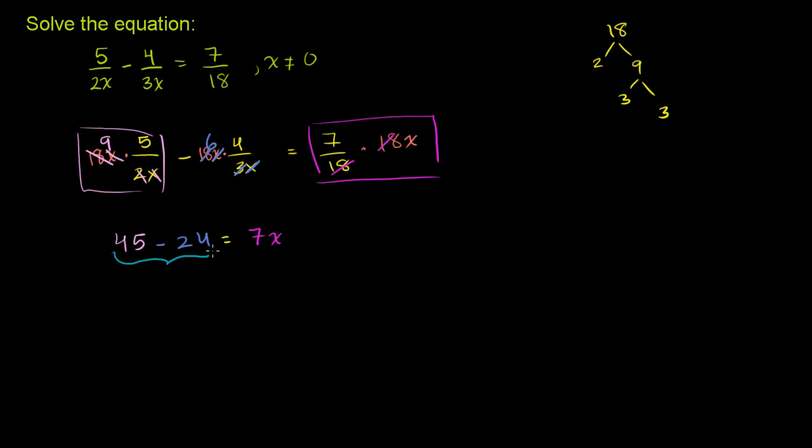Now what's 45 minus 24? It is, let's see, 45 minus 20 would be 25, then you subtract four more, it's 21. So you get 21 is equal to 7x.